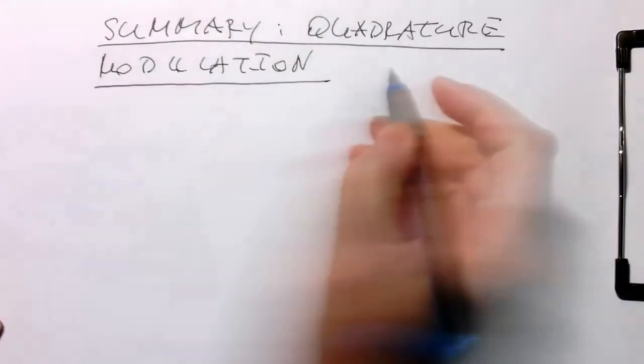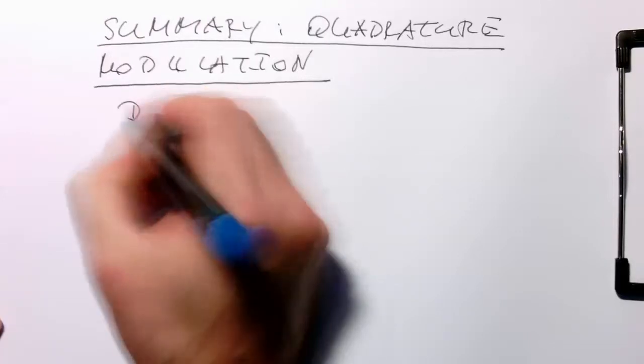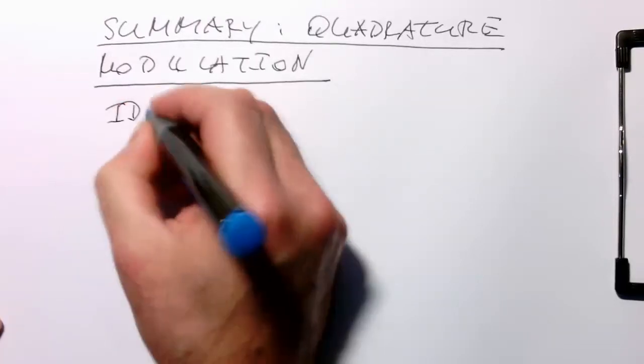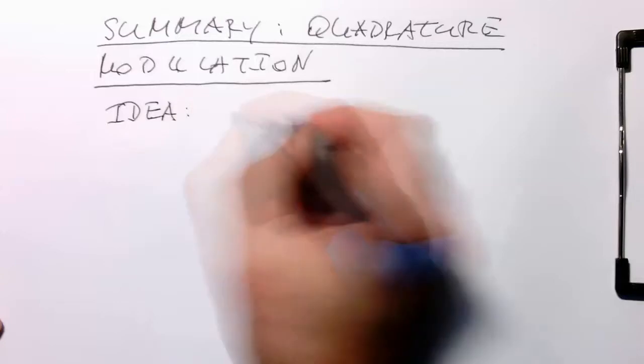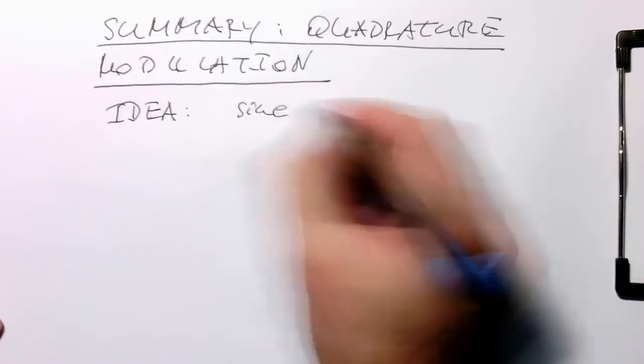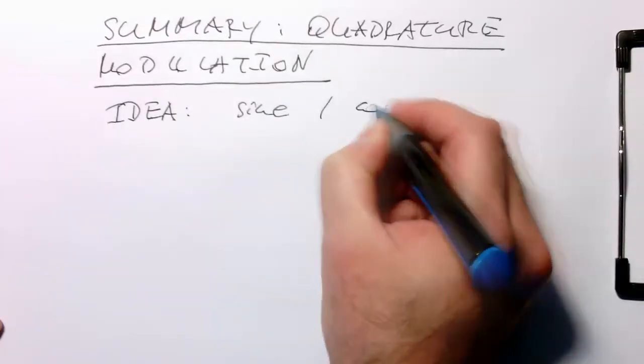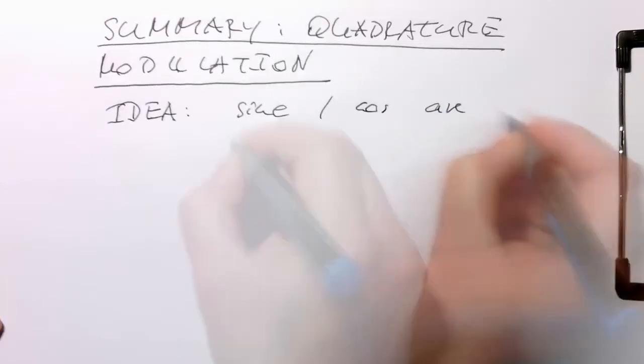The general idea behind this is that sine and cosine are orthogonal.